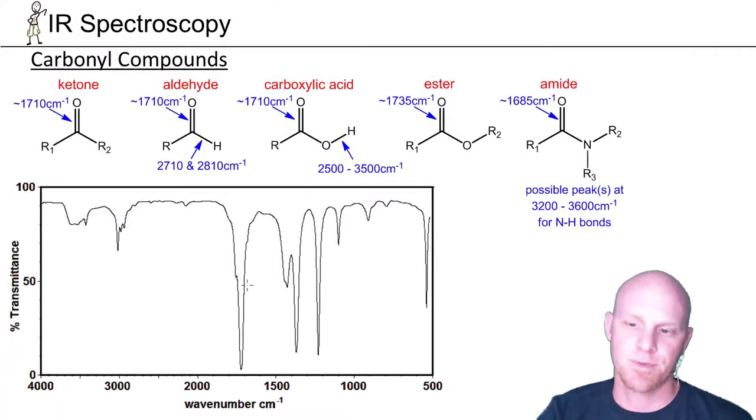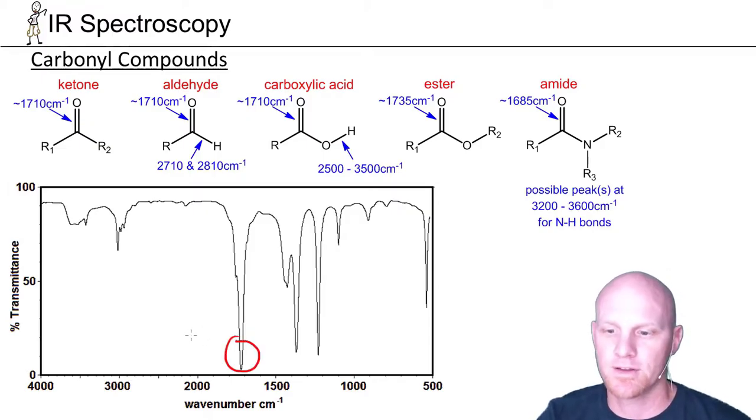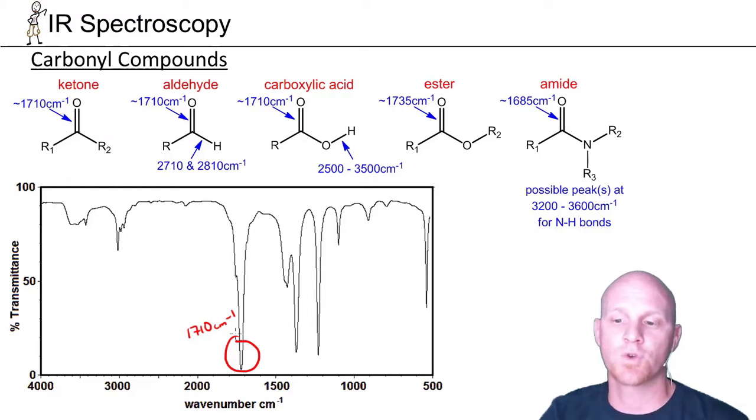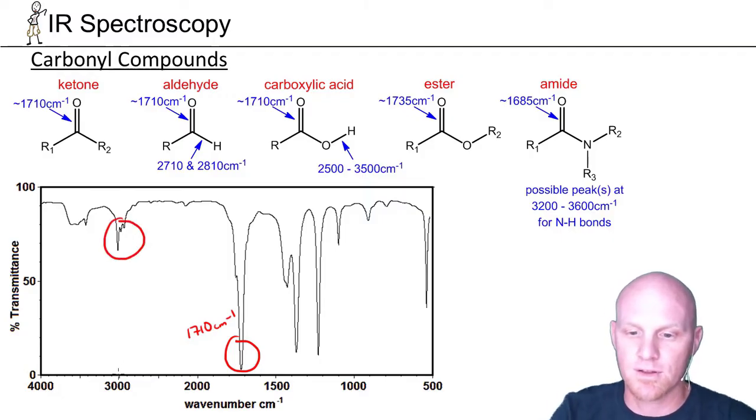In this next spectrum, we can definitely see this carbon-oxygen pi bond here, again just over 1700, so maybe around 1710 again. Notice it's a very strong absorption. That carbon-oxygen double bond is a very polar bond, and polar bonds tend to give stronger absorption.